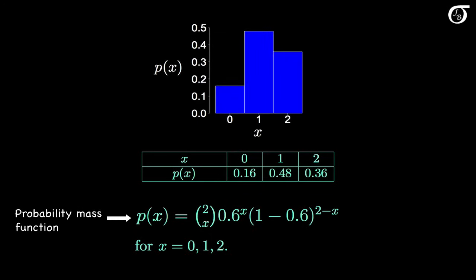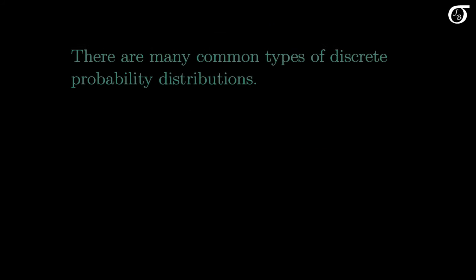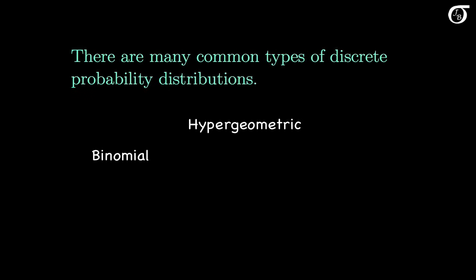So a discrete probability distribution might be illustrated with a table, a probability histogram, and/or a formula. There are many common types of discrete probability distributions — distributions that share common characteristics and arise in similar settings. For example, there's the binomial distribution, the hypergeometric distribution, the Poisson distribution, the geometric distribution, and many others. We'll talk about all of these distributions on another day.